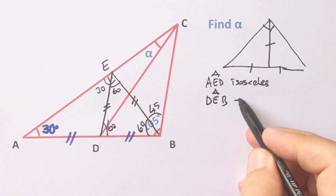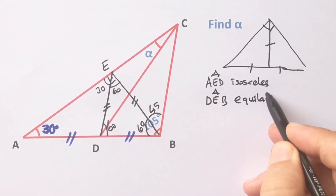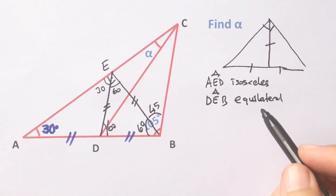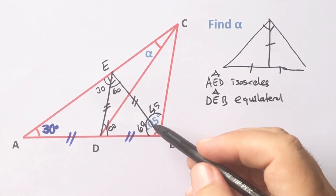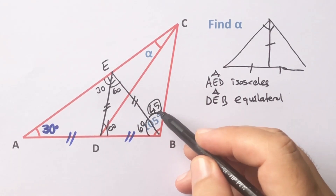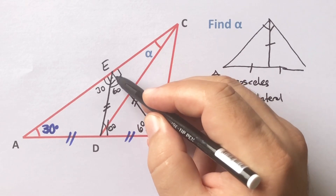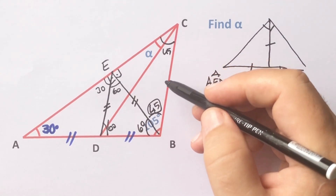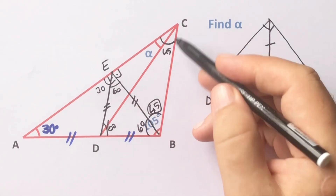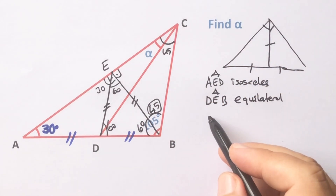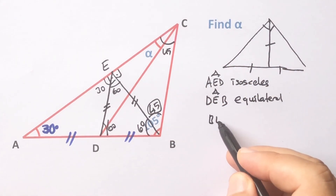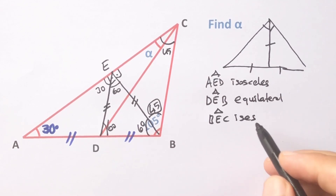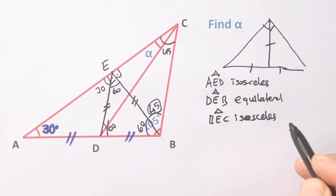60 degrees left here, and here is also 60 degrees — notice that we get an equilateral triangle. And then here is 45 degrees, so this angle is also 45 degrees, which means we get an isosceles right triangle. BEC triangle is an isosceles right triangle.